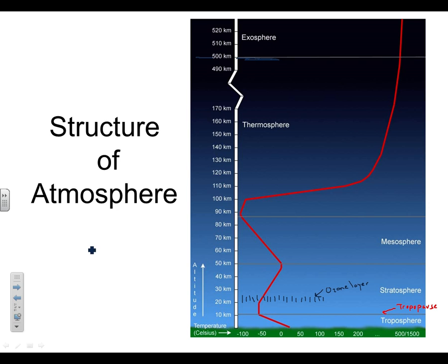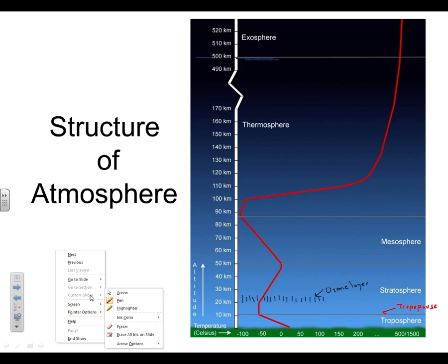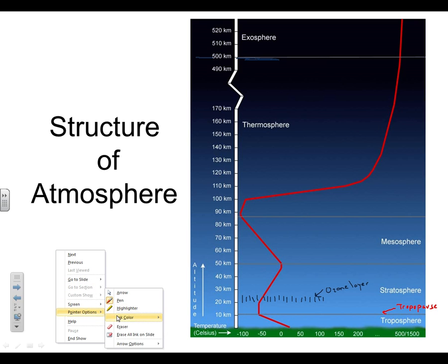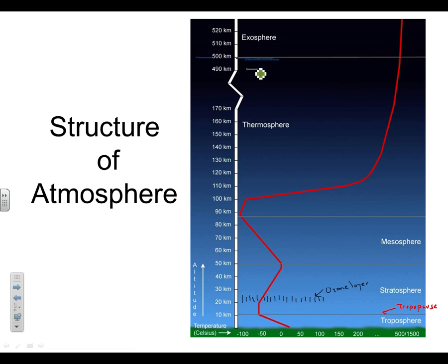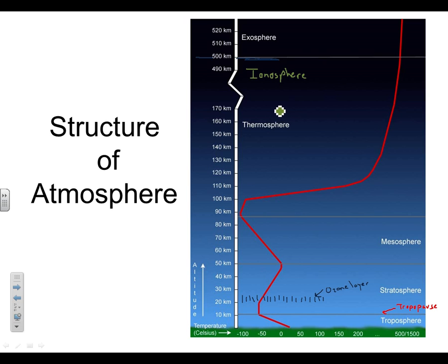The thermosphere is split into two layers: the ionosphere on the lower part, and the exosphere above it.